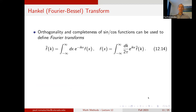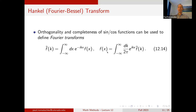Since Bessel functions fulfill orthogonality and completeness relations, they can be used as basis functions, analogous to the sine and cosine functions. This allows a generalization of the Fourier transform: recall that the Fourier transform takes f(x), multiplies by e^{−ikx} and integrates to give f̃(k), and the inverse Fourier transform takes f̃(k), multiplies by e^{ikx}, integrates over k, and returns f(x).